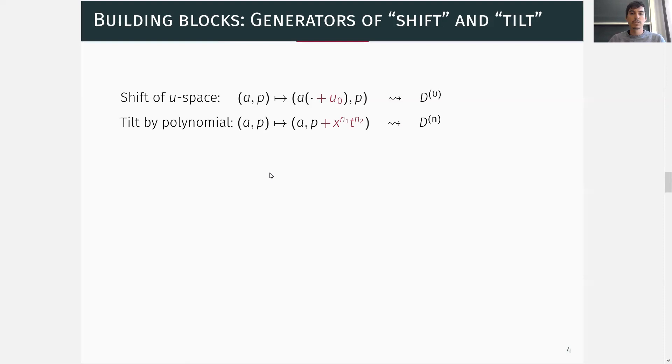Next, we consider the map that keeps the non-linearity A fixed, but tilts the polynomial P by a spacetime monomial. Again, lifting to the space of all functions, we denote the infinitesimal generator of this action by d^n, where n is now the pair (n_1, n_2), and should be different from 0 because we want this polynomial here to vanish at the origin.